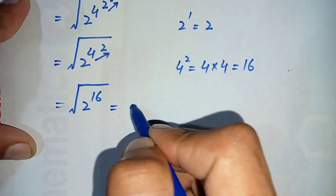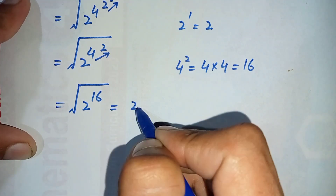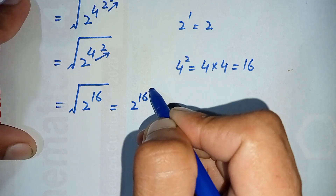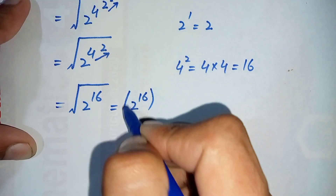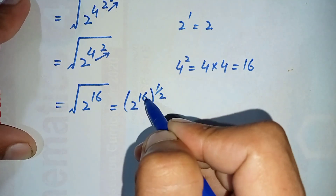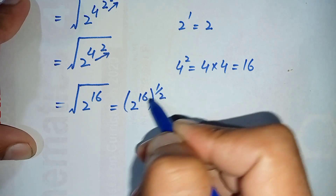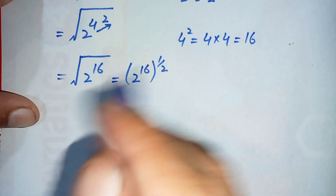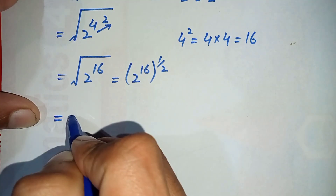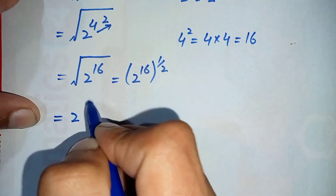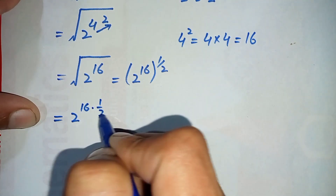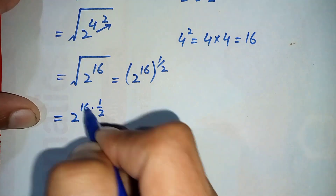The square root is the same as raising to the power of one half, so we replace the square root with a half in the power. We now have 4 raised to power one half, and in the next step we multiply these two powers. It becomes equal to 2 raised to power 16 times one half.